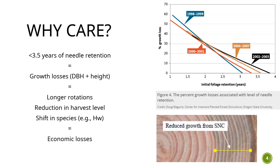This has been observed in Oregon. Swiss needle cast started to become a serious problem during the early 1990s in their fog belt and now affects 240,000 hectares. Their average growth losses are 20 to 55%, causing approximately 128 million US dollars per year in economic losses.